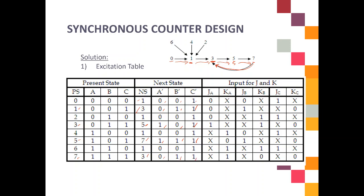You have another three values: 2, 4, and 6. For present state 2, the next state is 1. 1 in binary is 0, 0, 1. Same goes with 4 and 6 — next state for 4 is also 1, and next state for 6 is also 1, which is 0, 0, 1. So the next state column is done.